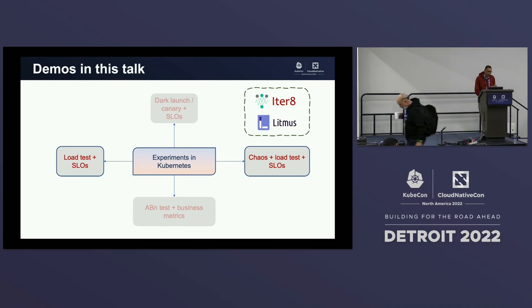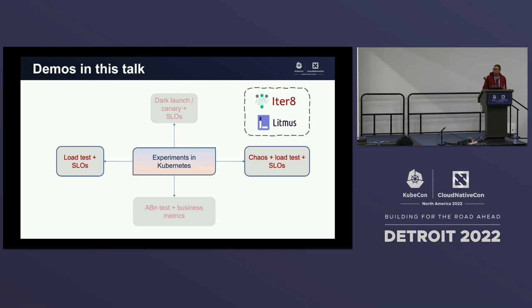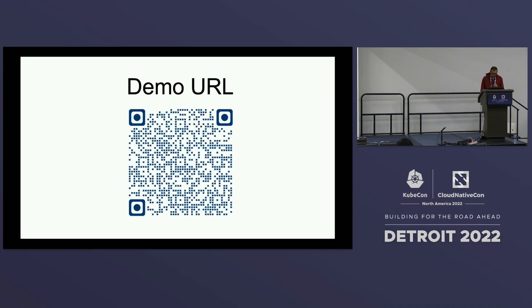In this talk, we are going to be focusing on a couple of very simple experiments, with pointers to others. We're going to focus on the load test experiment and also the resiliency experiment — the chaos testing experiment. We'll be using two open source tools: the first is called Iterate, an open source tool for Kubernetes experimentation and release engineering. The second is called Litmus, a CNCF incubating project that enables all sorts of chaos engineering and chaos injection experiments.